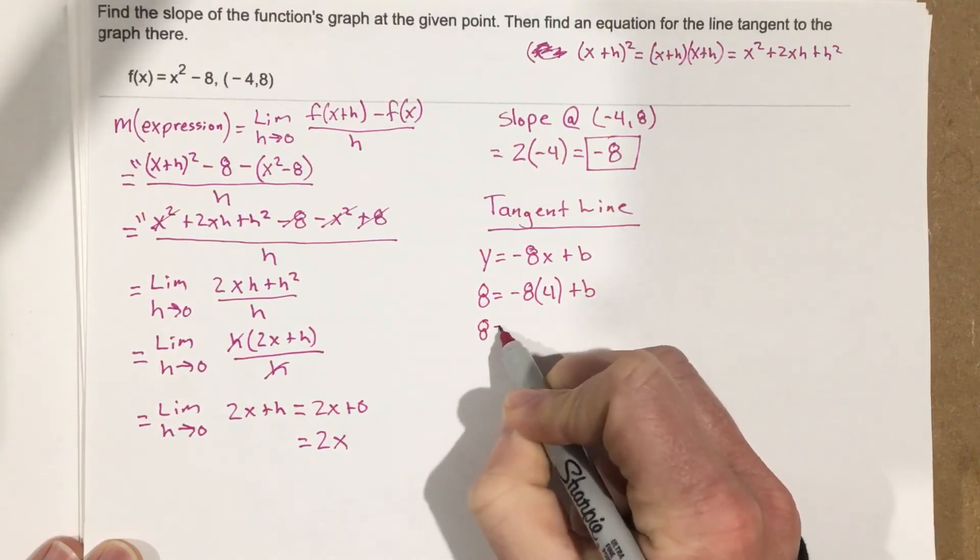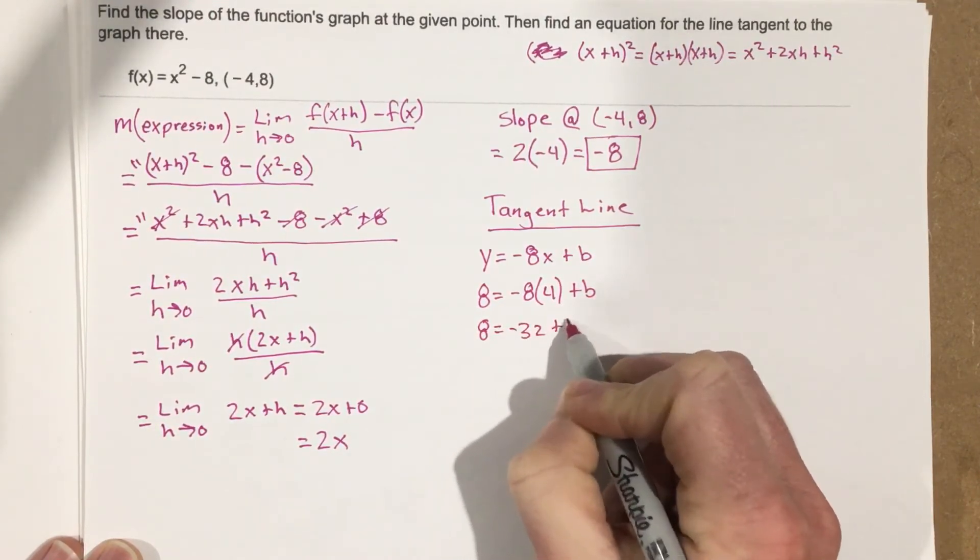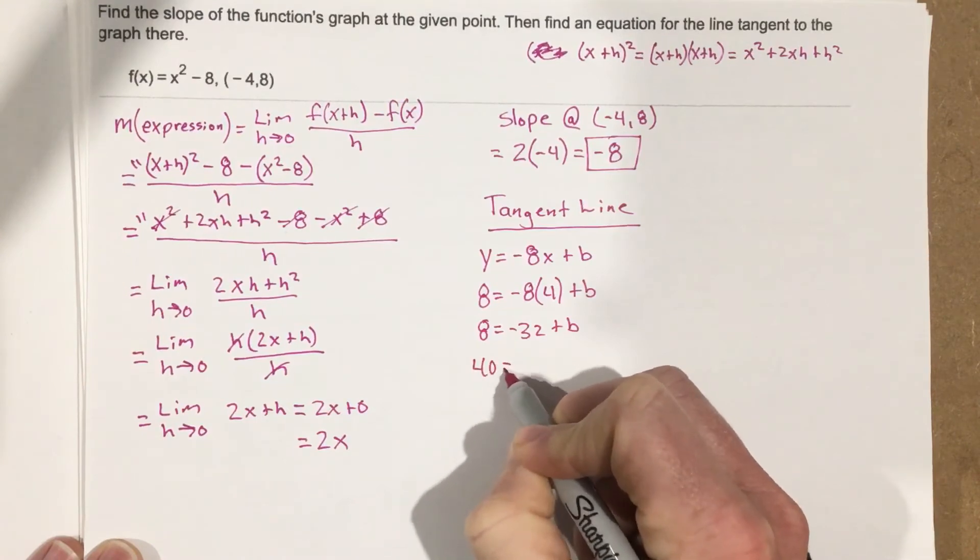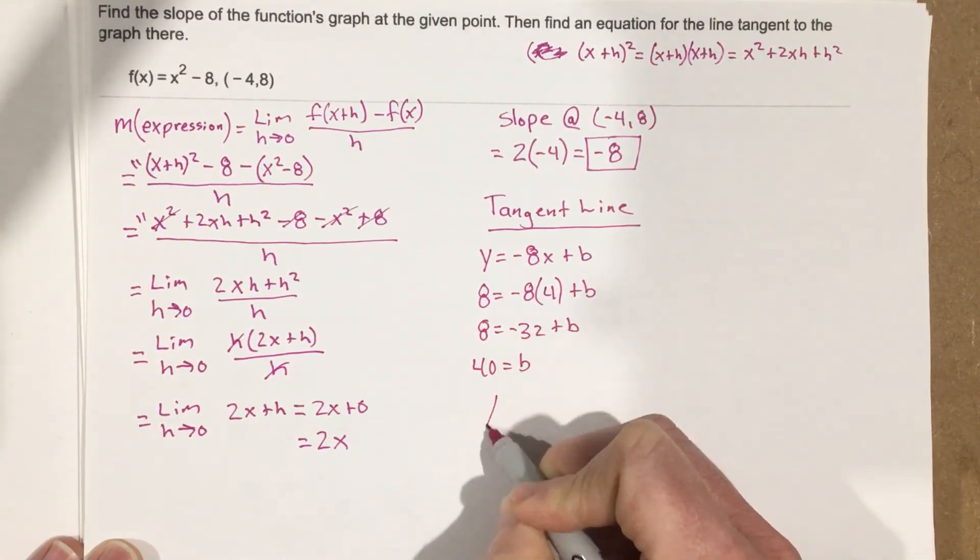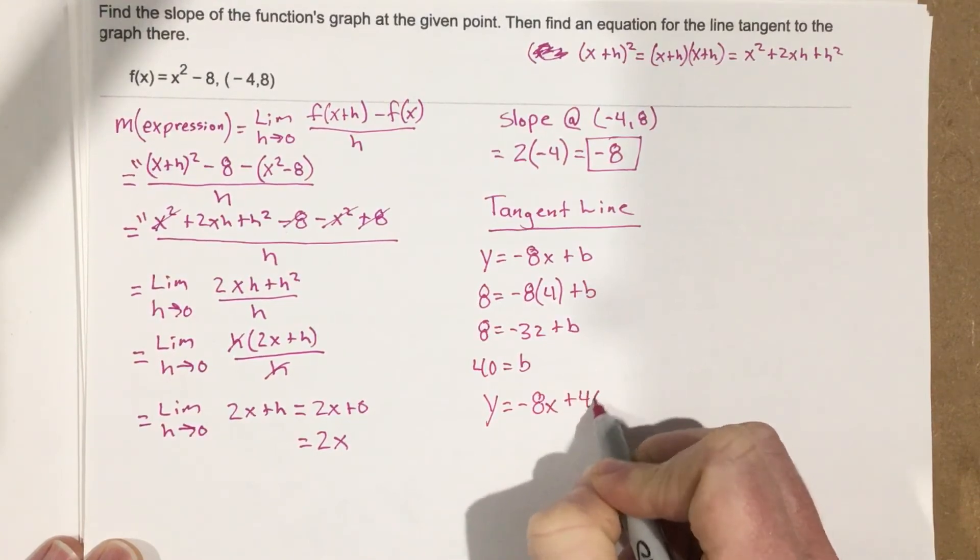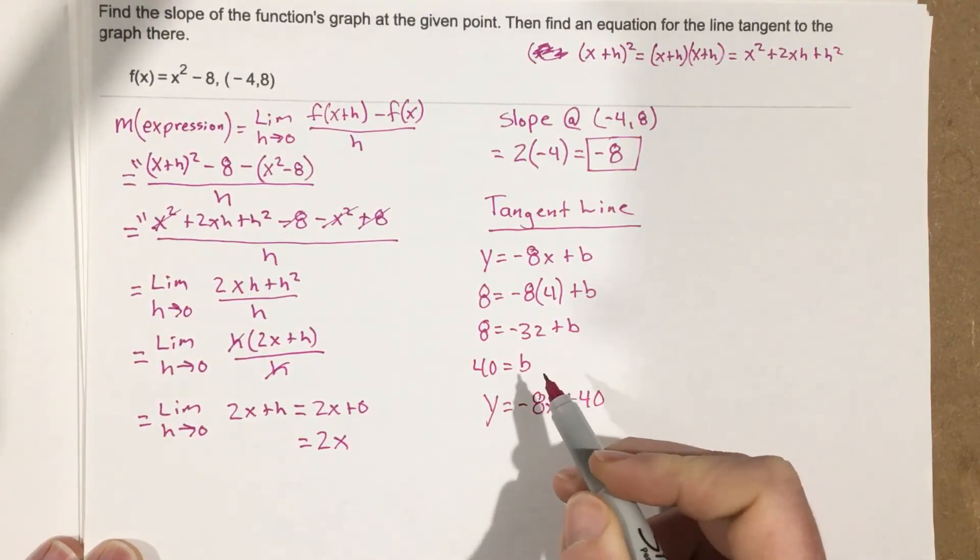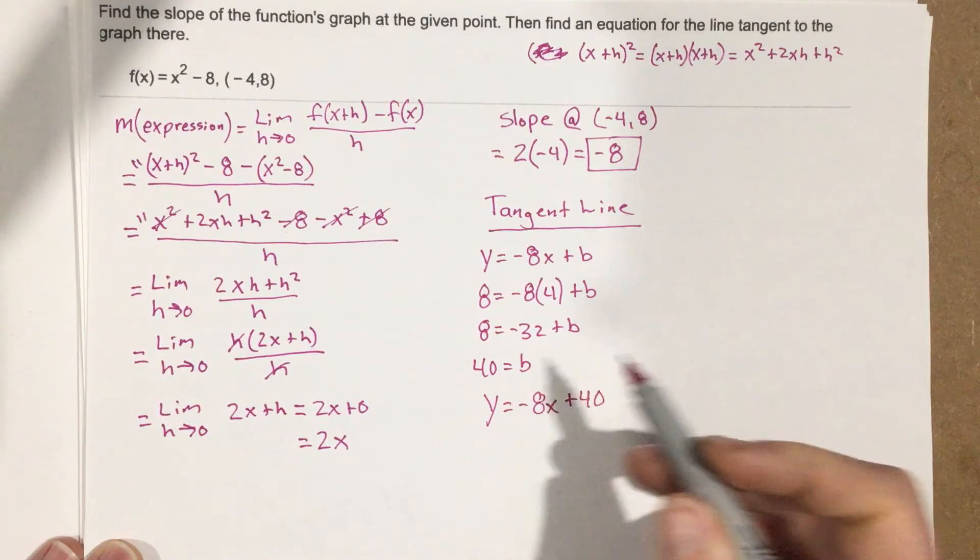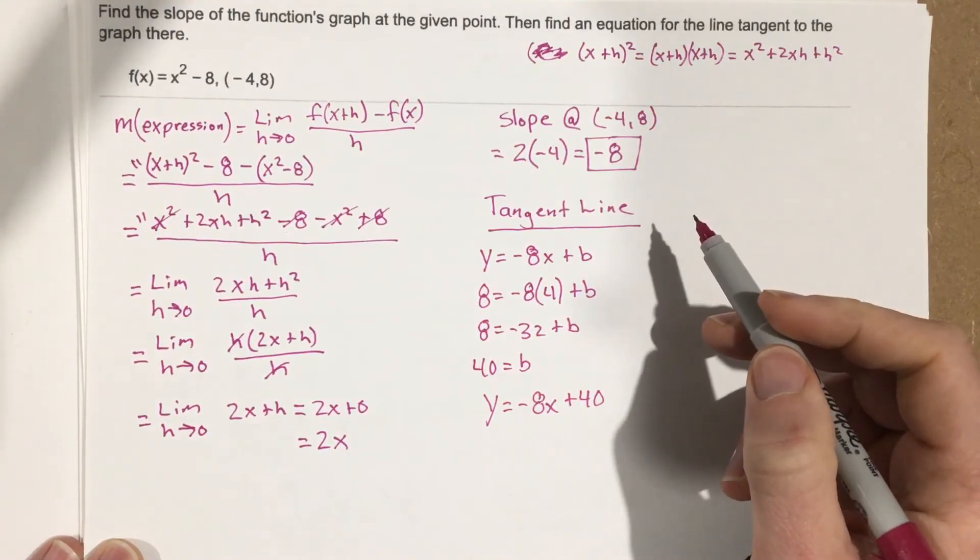So we get 8 = -32 + b. Add this over, we get 40 = b. So our tangent line is y = -8x + 40.